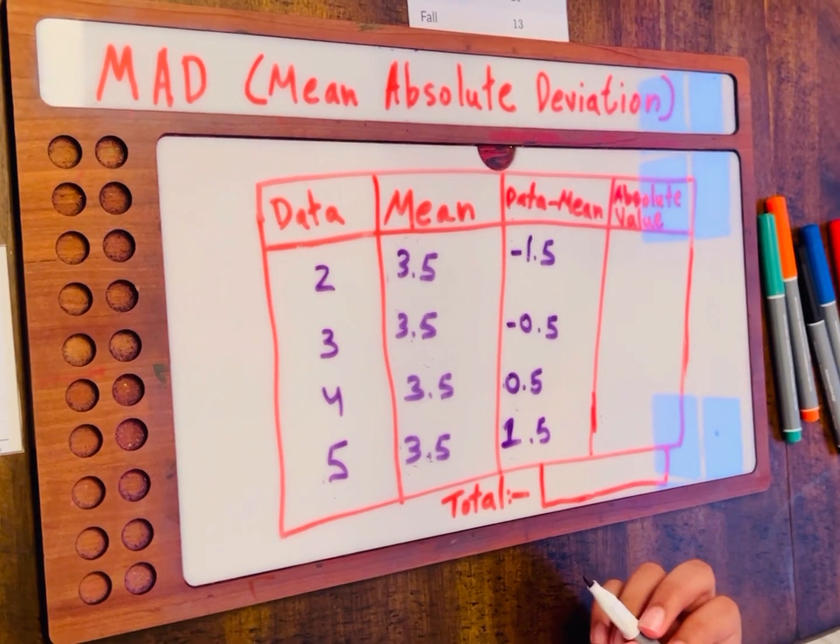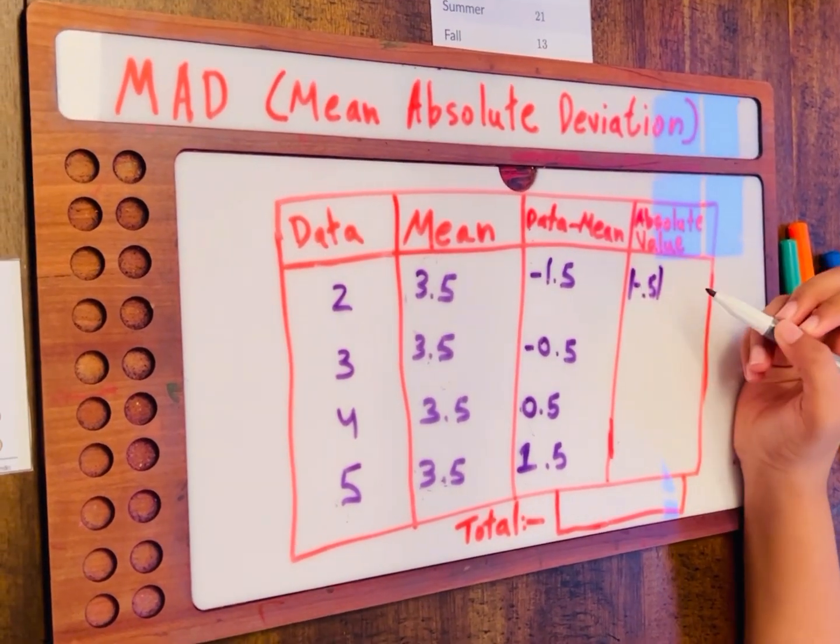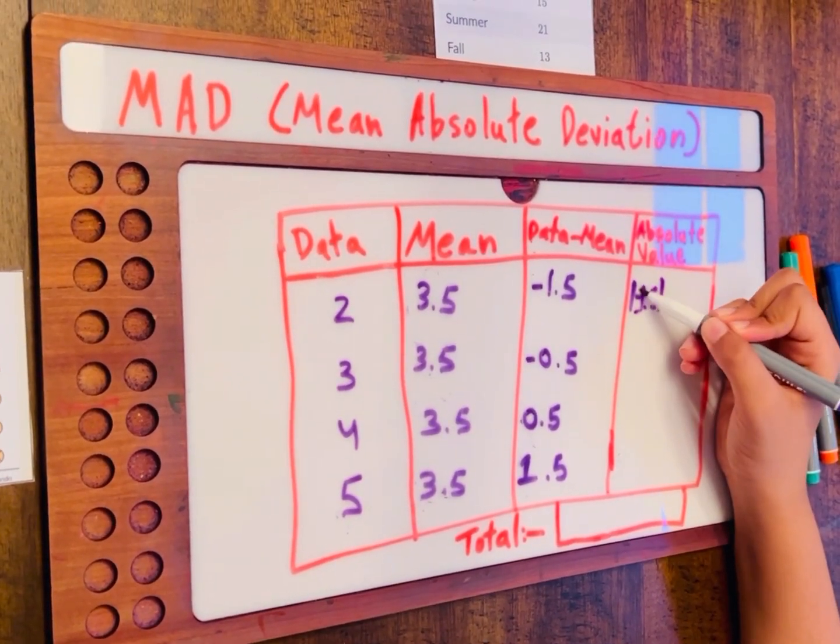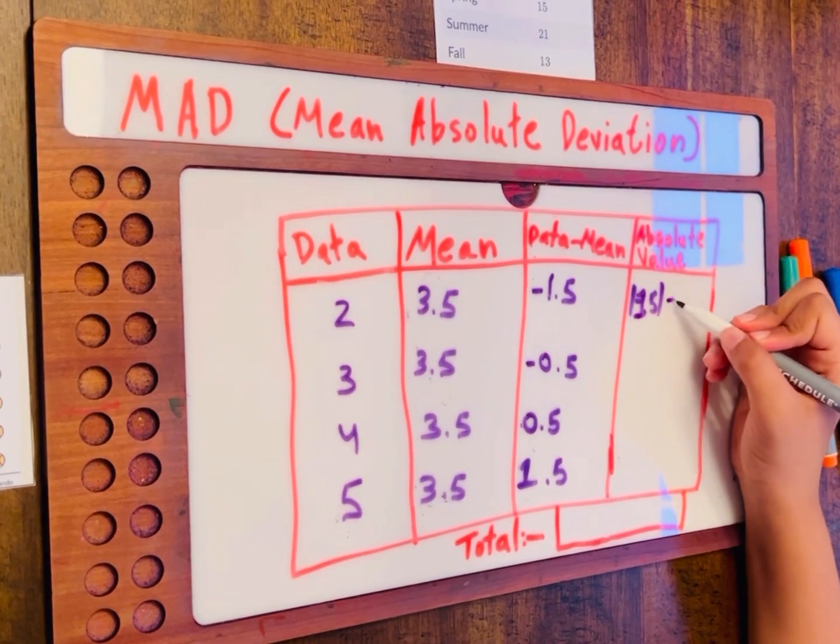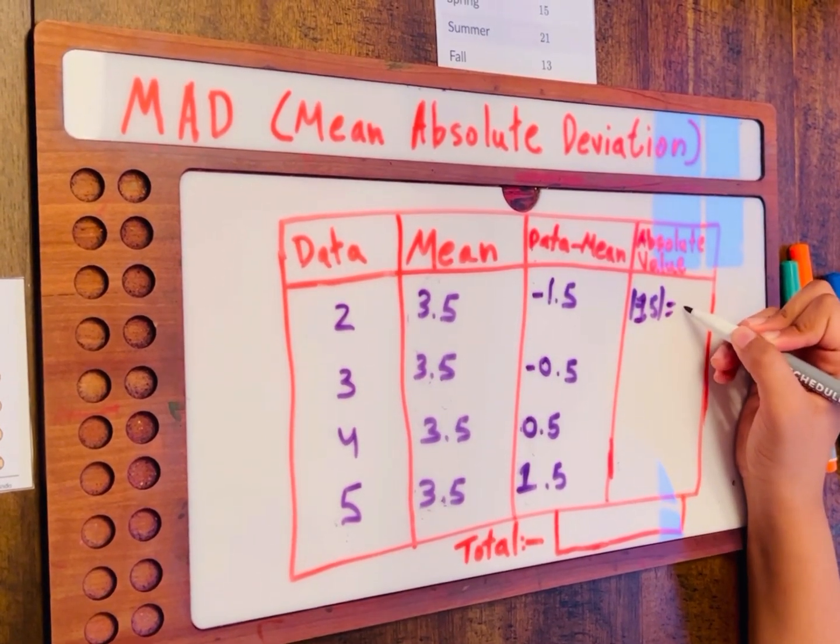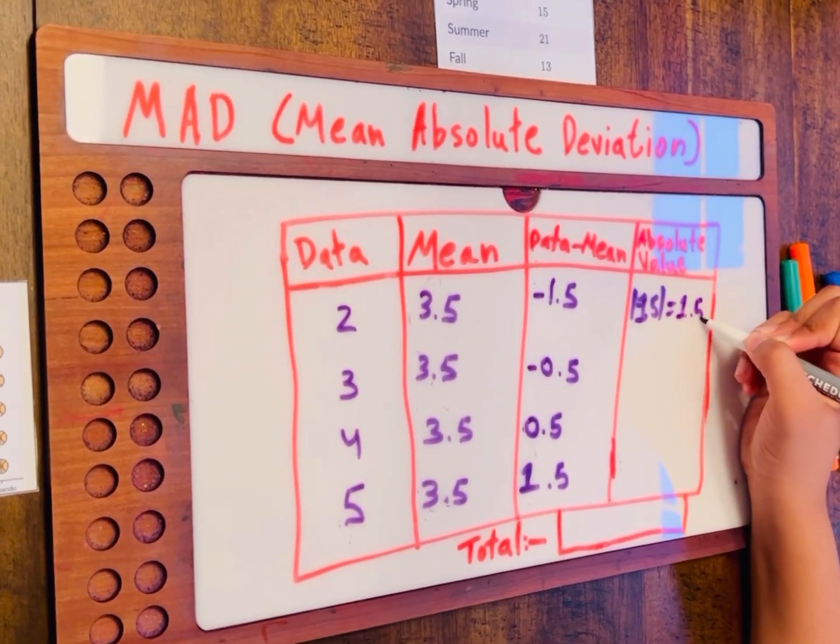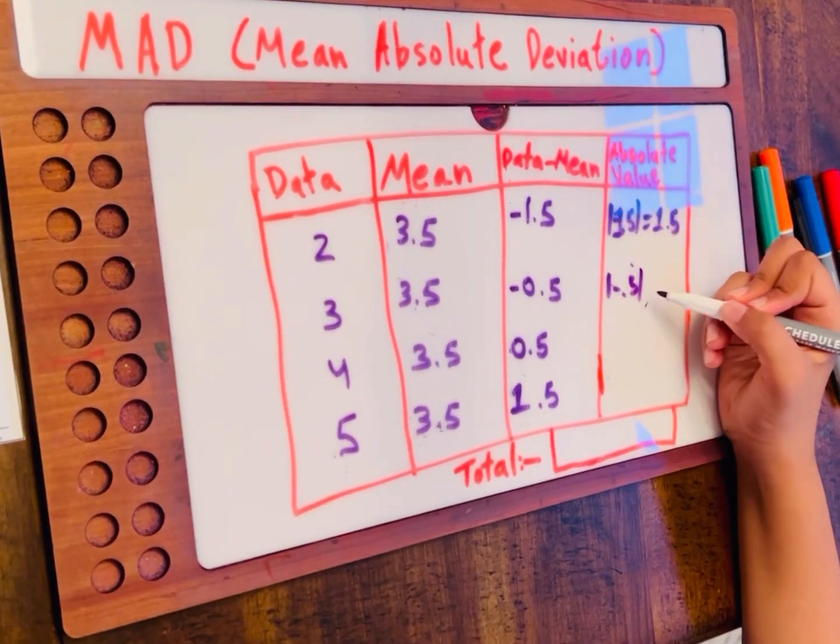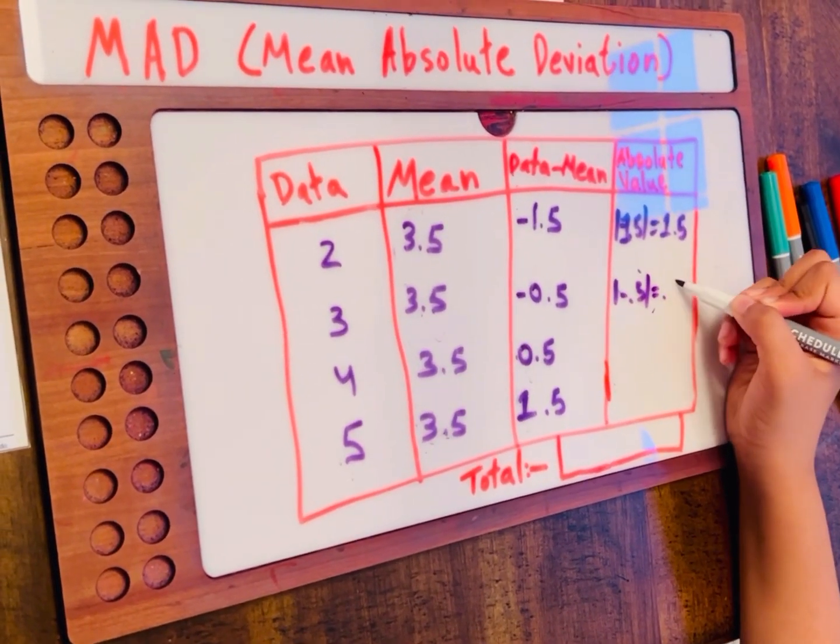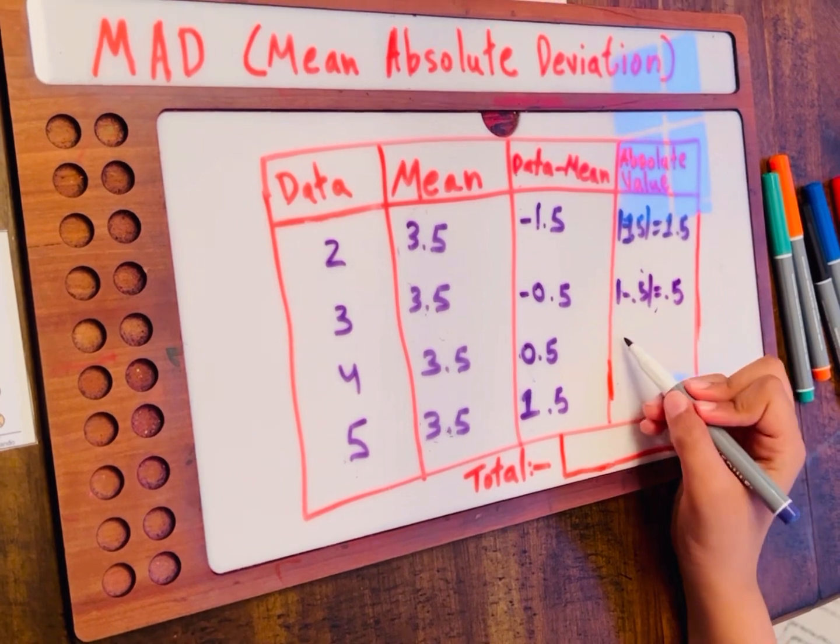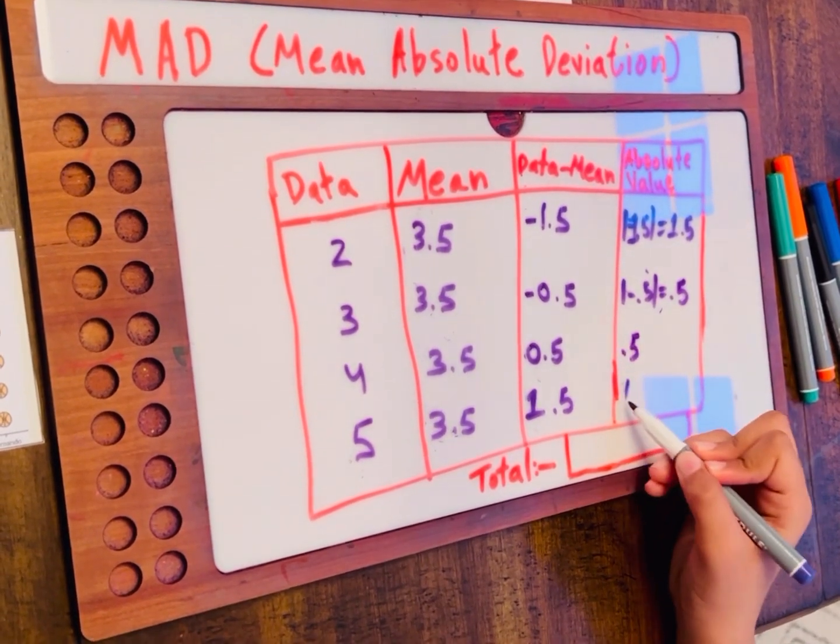Now, we have to find the absolute values. If we want to find the absolute value of negative 1.5, that's equal to 1.5 for absolute value. Find the absolute value of negative 0.5, we just put regular 0.5. This would be 0.5. And then 1.5.